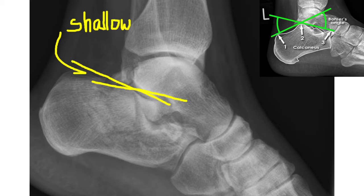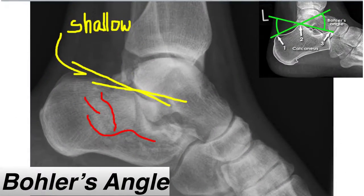Fractures with markedly diminished Böhler's angle demonstrate a much poorer two-year outcome regardless of treatment. It would seem that the initial Böhler's angle is highly prognostic regardless of treatment modality. The red lines here show the actual fracture lines going through the calcaneus.